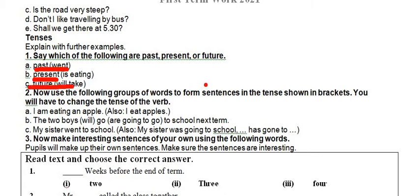Now use the following groups of words to form sentences in the tense shown in brackets. You have to change the tense of the word. The first: 'I apple eat' in present becomes 'I am eating apples.' Next: 'The two boys to school go next term' in future becomes 'The two boys will go to school next term.' And 'My sister school go' in past becomes 'My sister went to school' or 'My sister was going to school.' You can make your own choice of sentences.